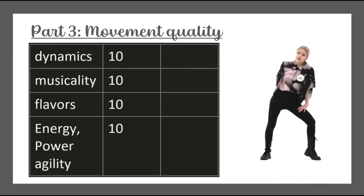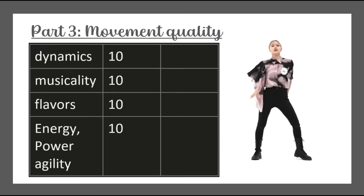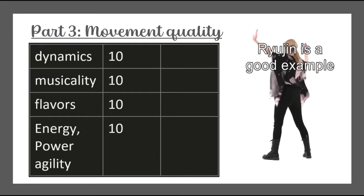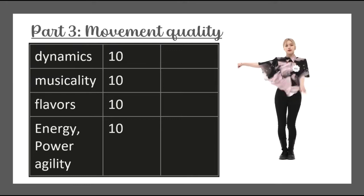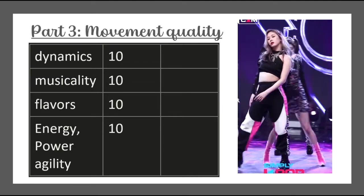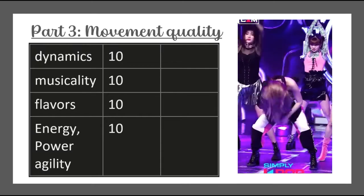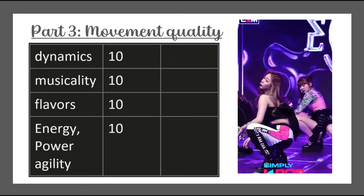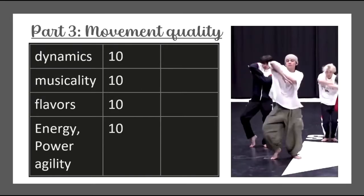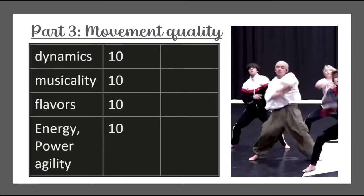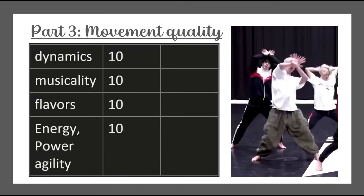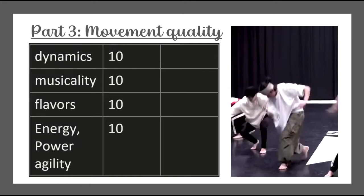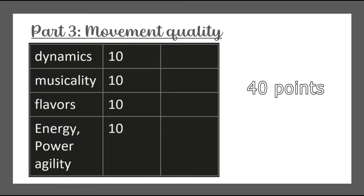Part 3 is called movement quality — absolutely my favorite. It regards how you can make your movements more interesting. The criteria are dynamics, musicality, flavor, energy, agility, and power projection, all in one criterion. I will mainly talk about flavor. Flavor or texture can be everything — predominantly I look at groove, flow, rhythm, flavors, variation, attitude, smooth transitions, and style change. Again, it's everything. Part 3 is weighted 40%, meaning you can earn up to 40 points.